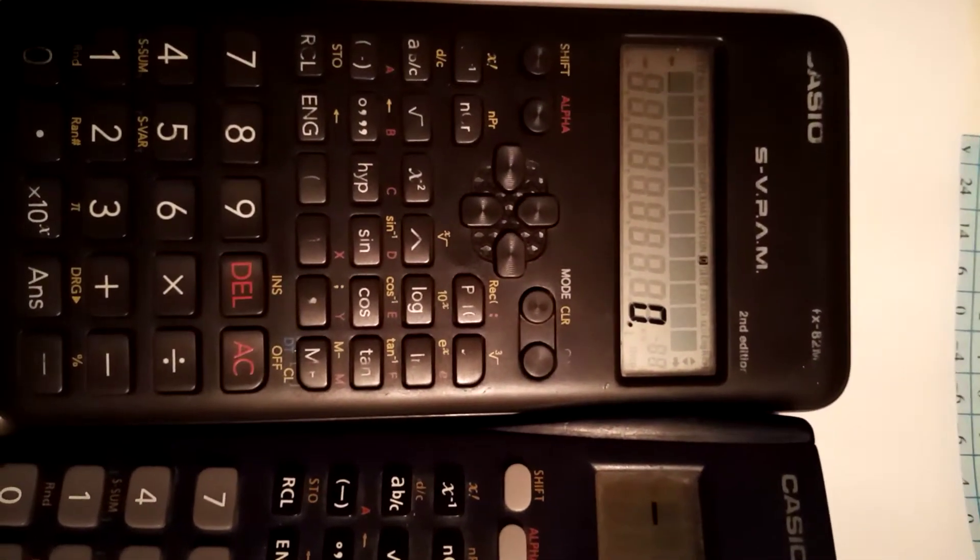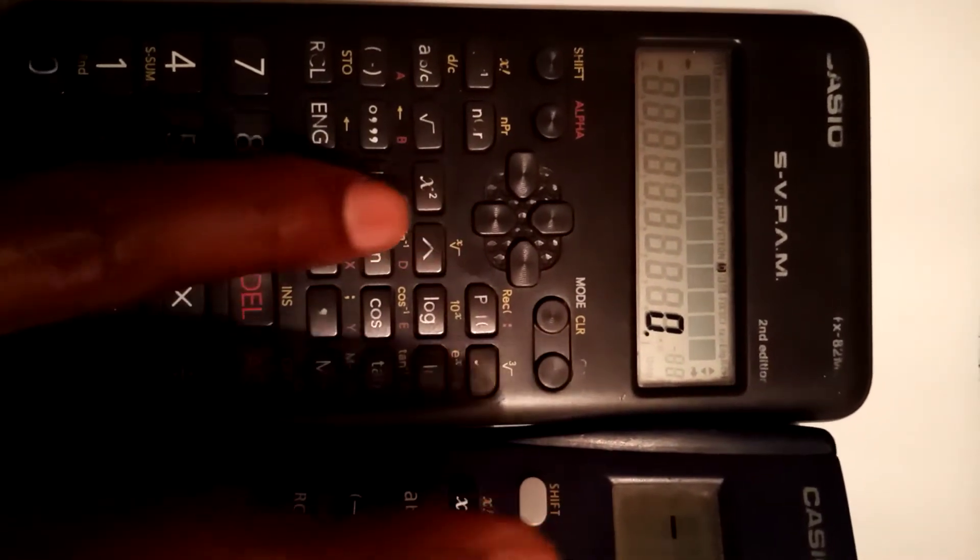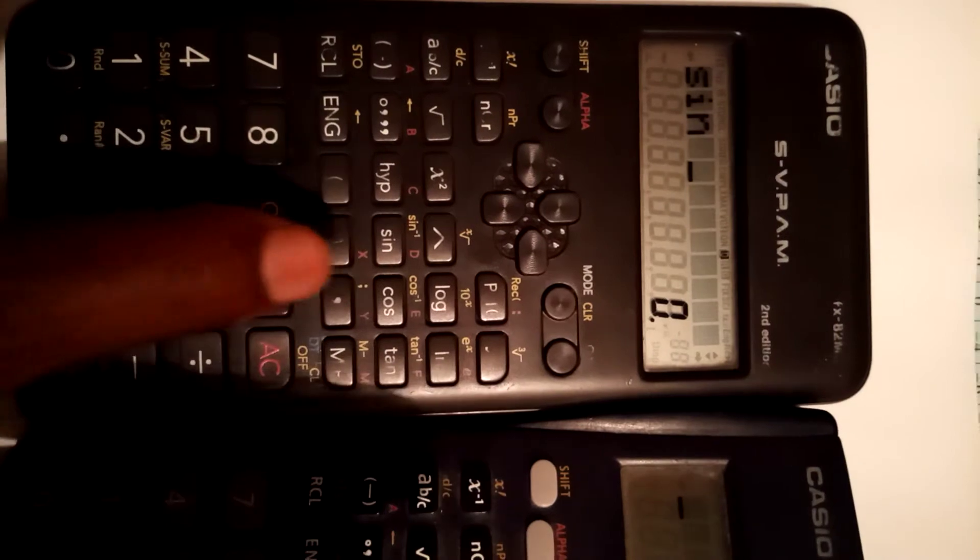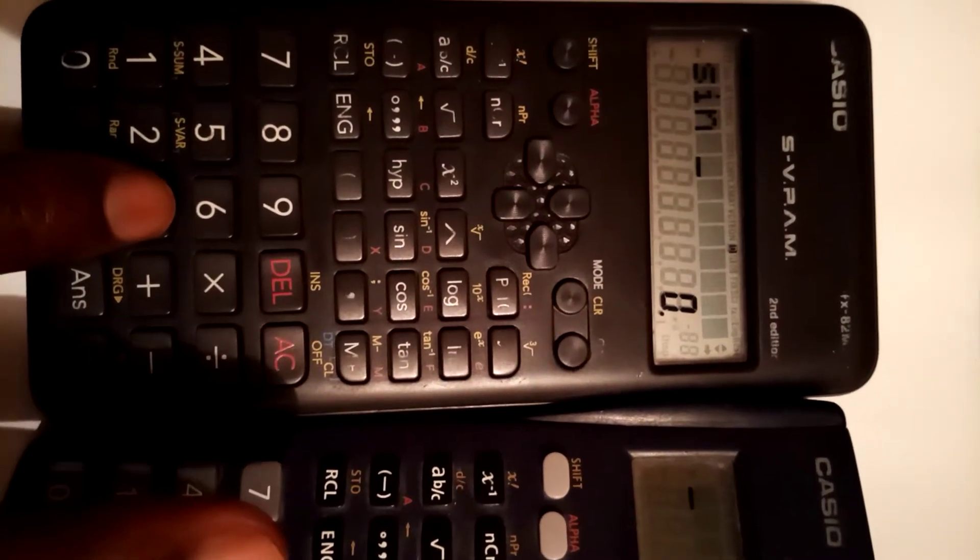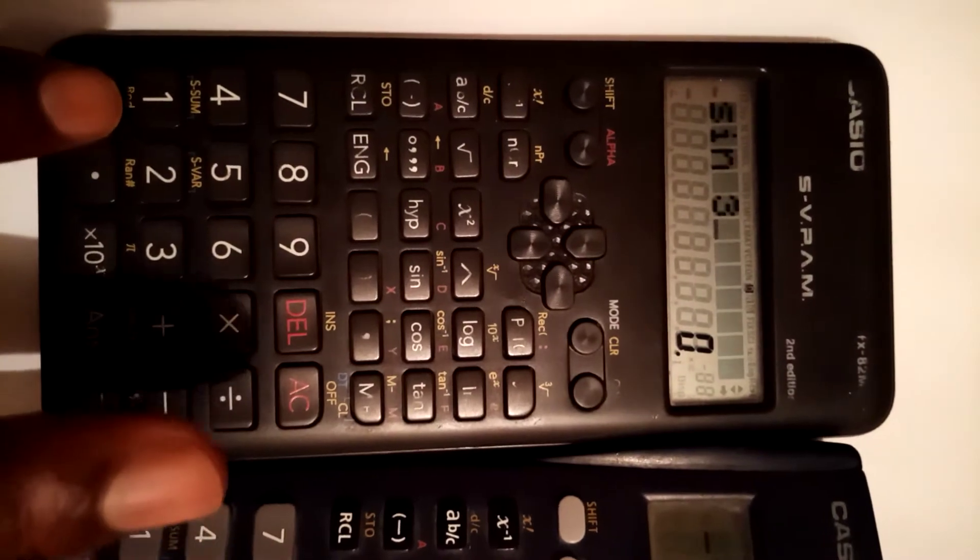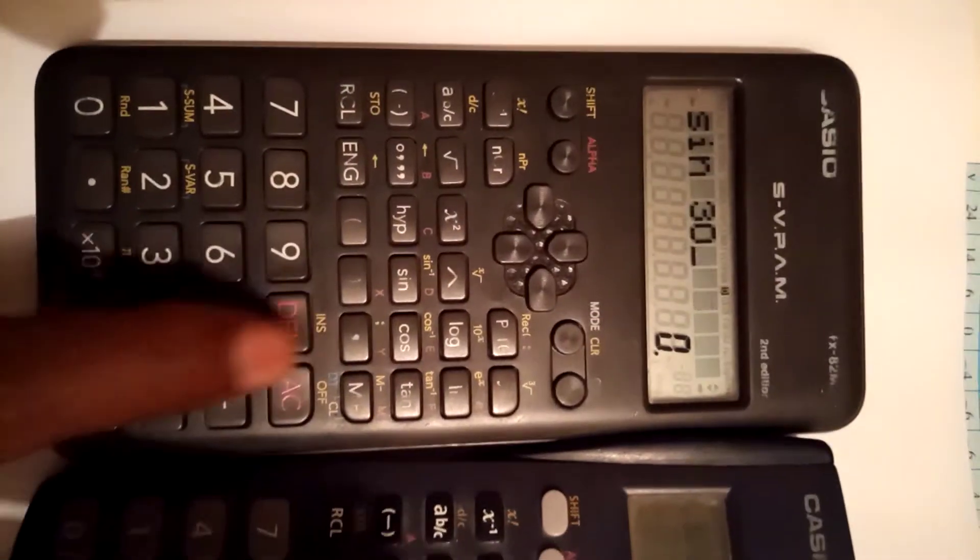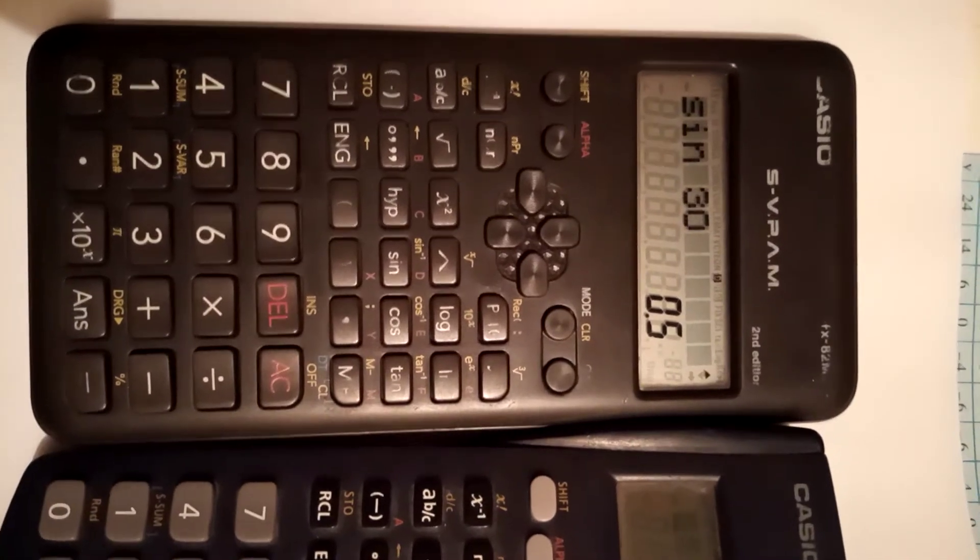I just want to show you how sometimes the calculator can mess it up. For example, let's try to look for the sine of angle 30. That's 0.5.